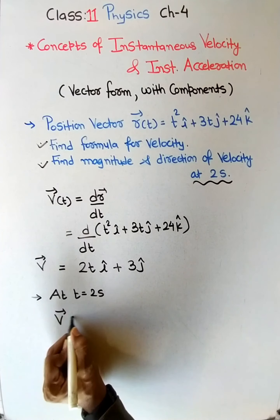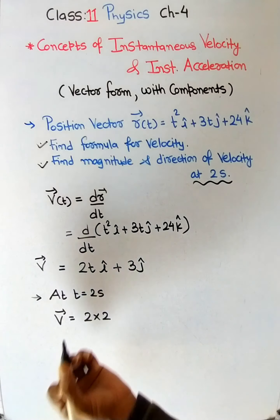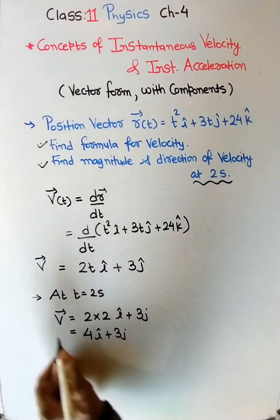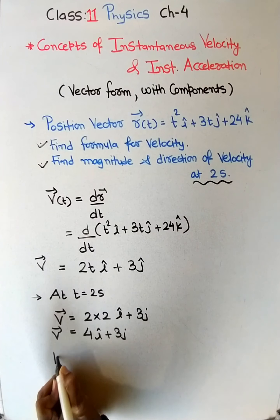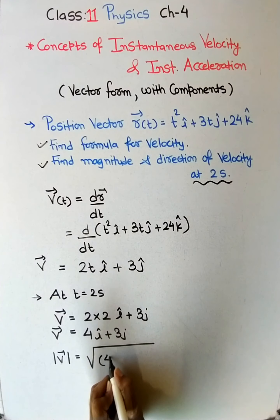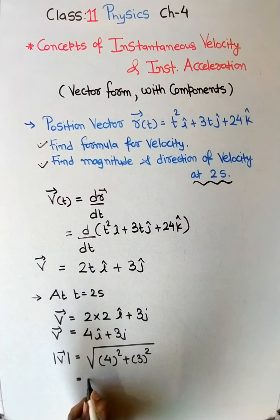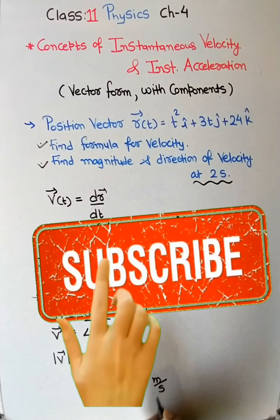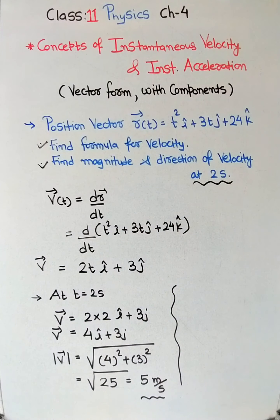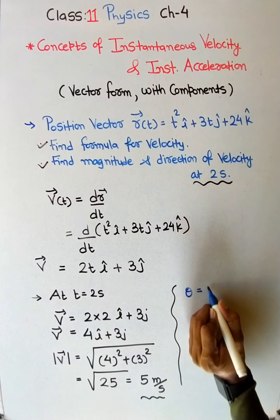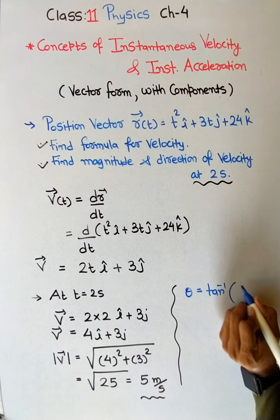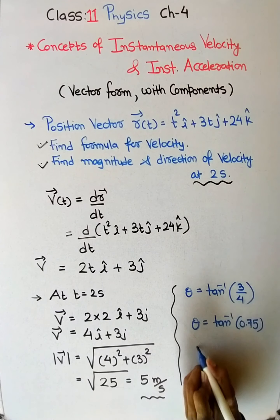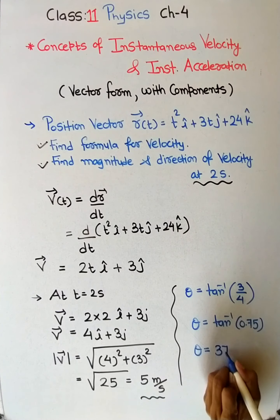At t = 2 seconds, we substitute t = 2: v = 2×2·i + 3·j = 4·i + 3·j. The magnitude is |v| = √(4² + 3²) = √(16 + 9) = √25 = 5 m/s. For direction, θ = tan⁻¹(vy / vx) = tan⁻¹(3/4) = tan⁻¹(0.75) ≈ 37°.